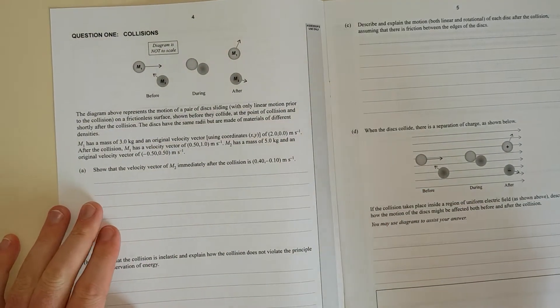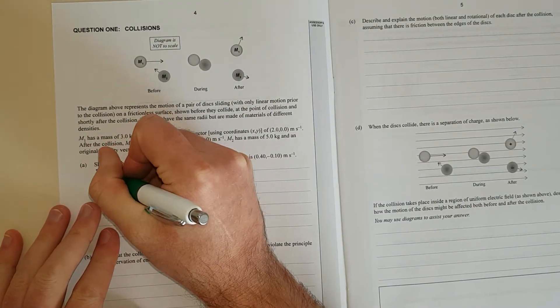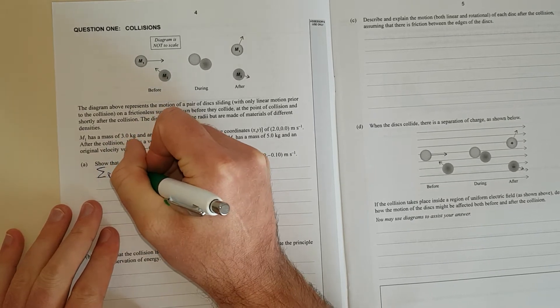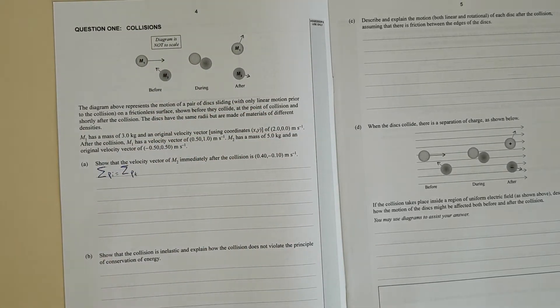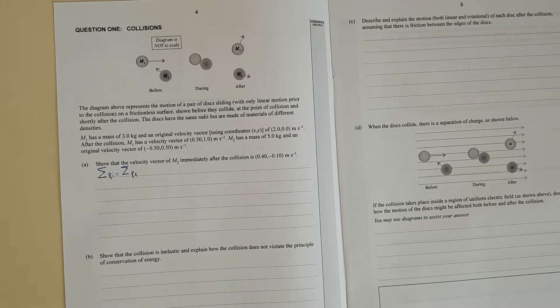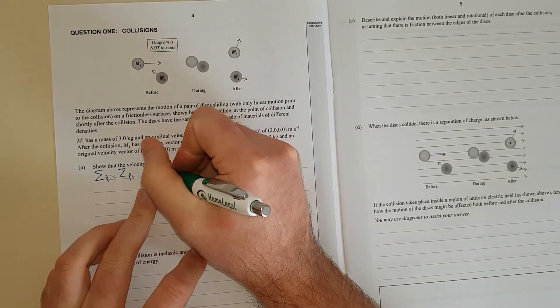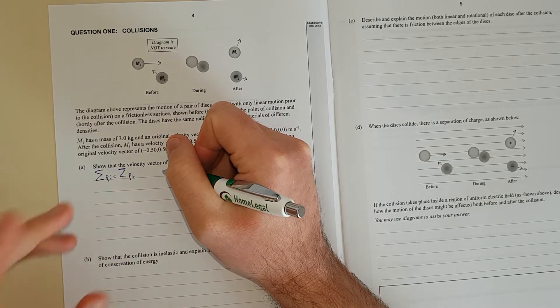So I'm just going to put it in general. Sum of momentums initially should equal sum of momentums finally, and this is true in the x-coordinate system and in the y-coordinate system, but they need to be treated separately. So we're going to sum up the initial momentum.